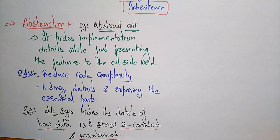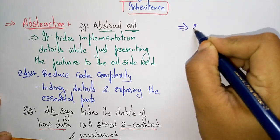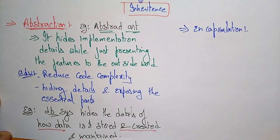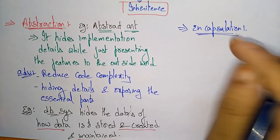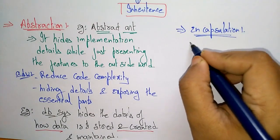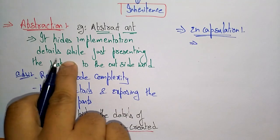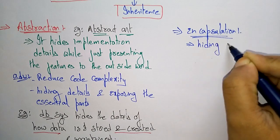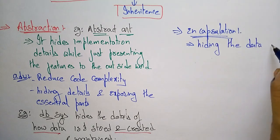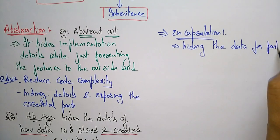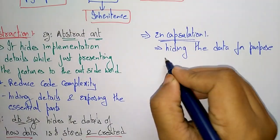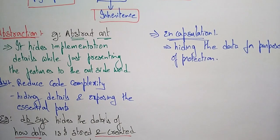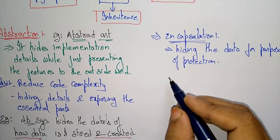Now let us move to the next concept: encapsulation. Encapsulation and abstraction are almost similar, but there is a difference. Both hide data — abstraction hides data and encapsulation also hides data — but encapsulation hides data for the purpose of protection.